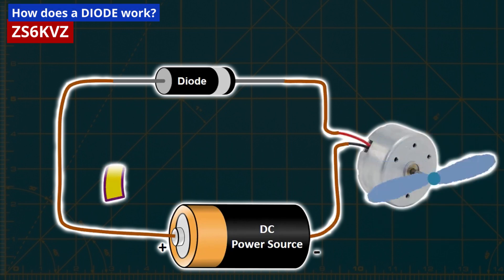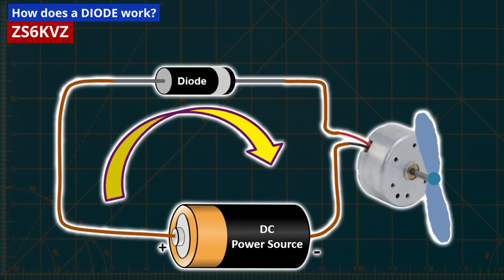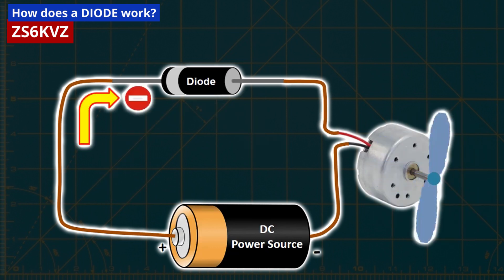Similarly, if we replace the lamp with the motor, when the diode is connected with the flat side facing forward, the motor will start as current flows through the circuit. Conversely, if we connect the diode in reverse, no current will flow, and the motor will not start.